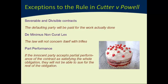The third exception is called part performance, and the rule was established in Sumpter v Hedges — an 1898 case reported in the first volume of the Queen's Bench Reports for that year, starting at page 673. If you accept part performance of the contract, you can hardly turn around after that and say you want to sue for it anyway.